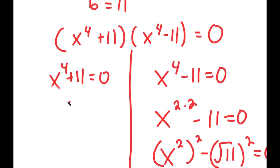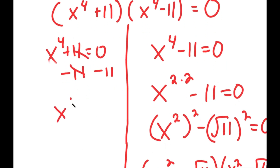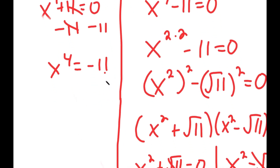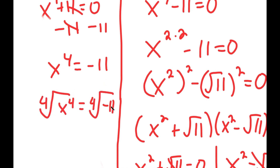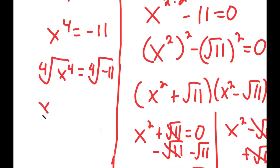Going back to x to the power of 4 plus 11 equals 0, I subtract 11 on both sides to get x to the power of 4 equals negative 11. Taking the fourth root on both sides, x equals the fourth root of negative 11, which is positive or negative.